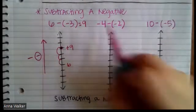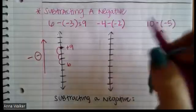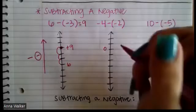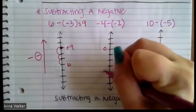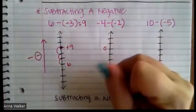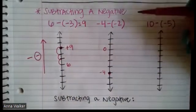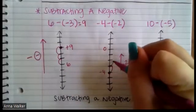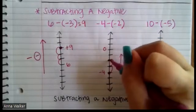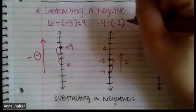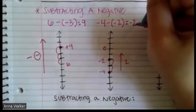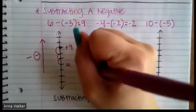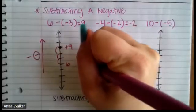Let's try another example, starting at negative four. When we subtract negative two, we go up the number line two spots: one, two — ending at negative two. So negative four minus negative two equals negative two.